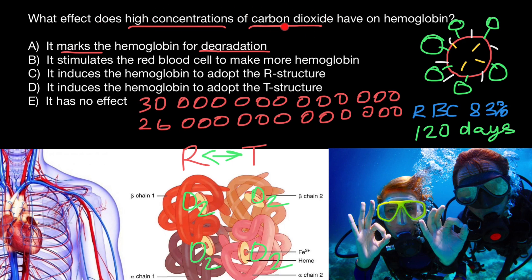What effect does higher concentration of carbon dioxide have on hemoglobin? Variant C says it induces hemoglobin to adopt the R state — meaning it would take oxygen from the tissues, which is wrong. Variant D says it induces the T state: hemoglobin arrives in the relaxed form with oxygen bound, releases the oxygen in the tissues, and picks up carbon dioxide — transitioning from R state to T state. So our answer is variant D. Subscribe and see you in the next video. Goodbye.